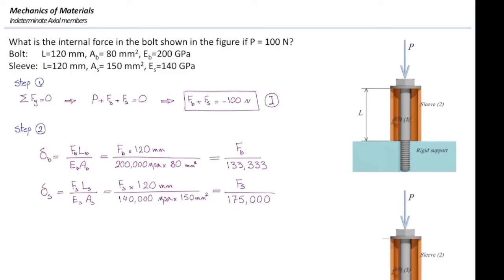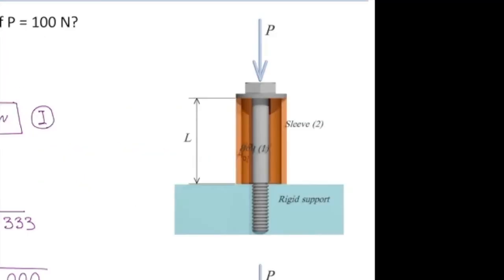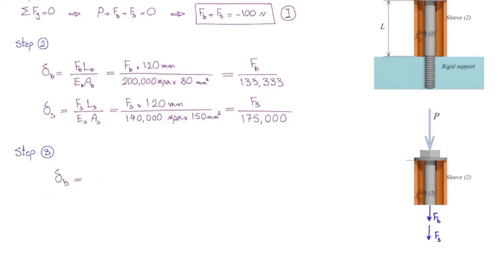Now, we get to the core of this problem, to the most important step of this problem. And that is compatibility of deformation. What does it mean? We need to find what is the relation between deformation of different elements that we have here. Let's look into this problem. Say the bolt is compressing, is getting shorter by one millimeter because of the applied force. How much do you expect to have deformation in the sleeve around that? Same, less, more. It would be same. Why is this the same as the bolt? Because they are attached together fully at the end. Delta B is equal to delta S.